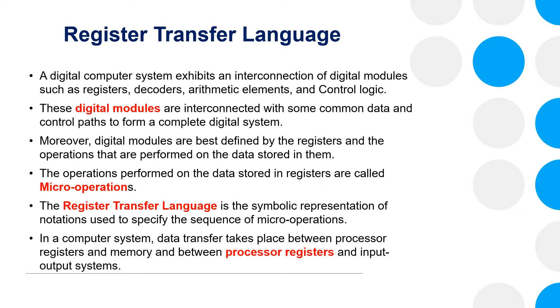In a computer system, data transfer takes place between processor registers and memory, and between processor registers and input-output systems.